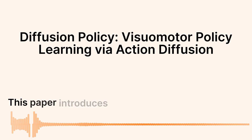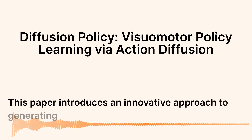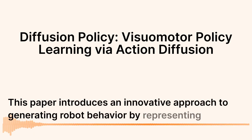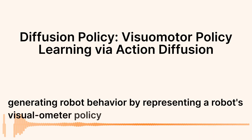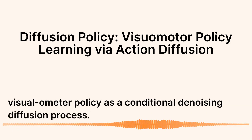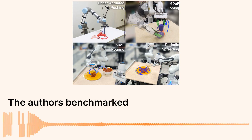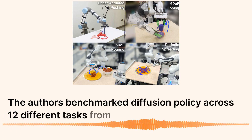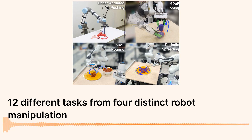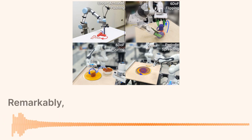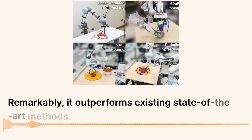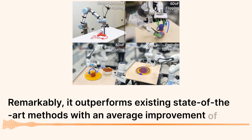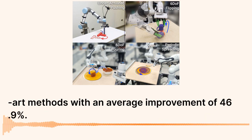This paper introduces an innovative approach to generating robot behavior by representing a robot's visuomotor policy as a conditional denoising diffusion process. The authors benchmarked diffusion policy across 12 different tasks from four distinct robot manipulation benchmarks, and remarkably, it outperforms existing state-of-the-art methods with an average improvement of 46.9%.